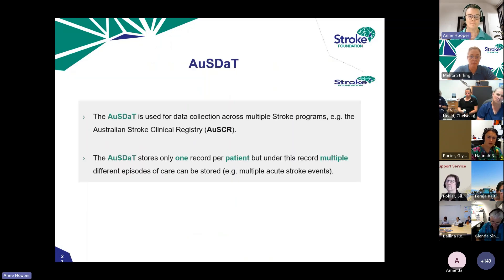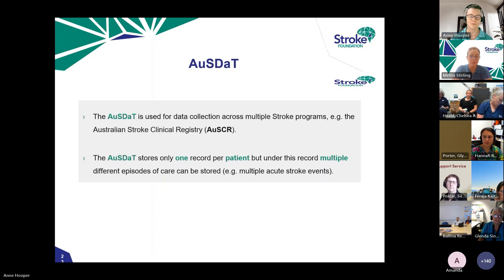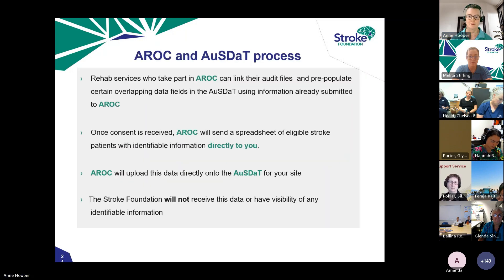The patient record management page will be your go-to page in the clinical audit. That's where you'll create new records, search for patients, export records at the end of the audit, and create reliability checks. AUSDAT is used for multiple programs — including the rehab audit, acute audit, the Australian Stroke Clinical Registry (OSCAR), and QUASC — and it stores one record per patient but may have multiple episodes within that.